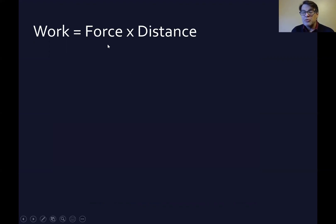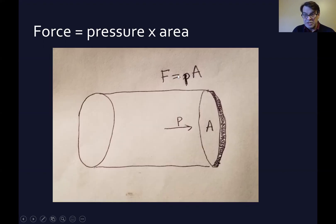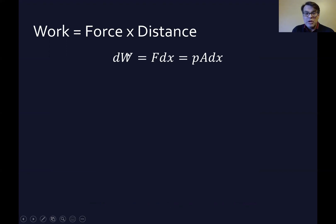Now we know that work is force through a distance. So if we take the incremental change in work equals the force through an incremental distance. If work equals force times a distance, then the incremental change in work is the force times the incremental change in distance. But we've just seen that force equals pressure times area. So we can substitute PA for F. And now we have that the incremental change of work equals the pressure on an area through an incremental distance.